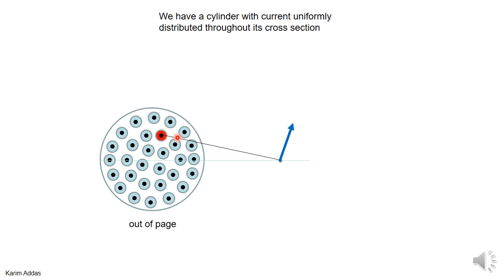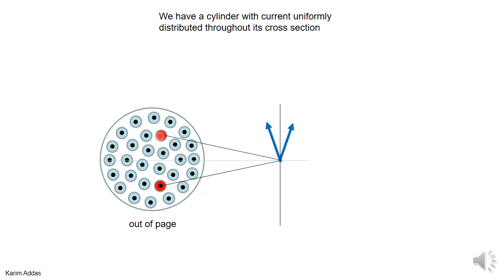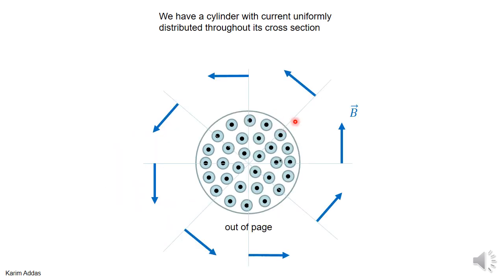For one thin wire, ds is out of the page and r-hat points outward, so ds cross r-hat is perpendicular to that line. Take another thin wire exactly opposite — it makes a magnetic field in the opposite horizontal direction. When you add the two, the components in one direction add and the components in the other cancel. From symmetry, you always have a wire and one opposite to it, so the total magnetic field will be pointing upward at that point.